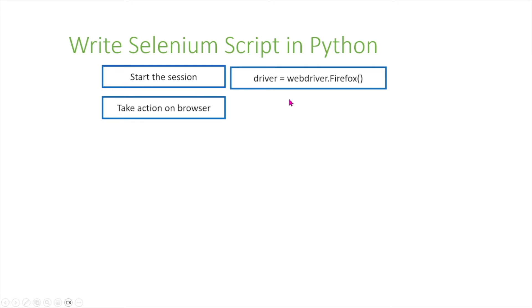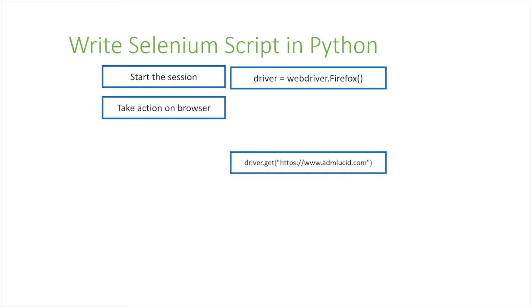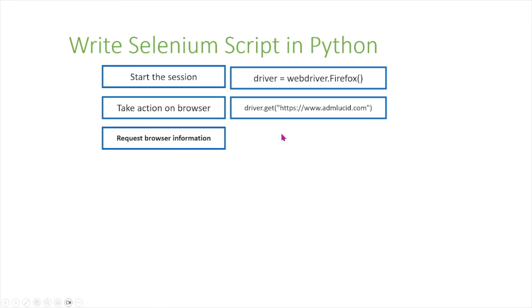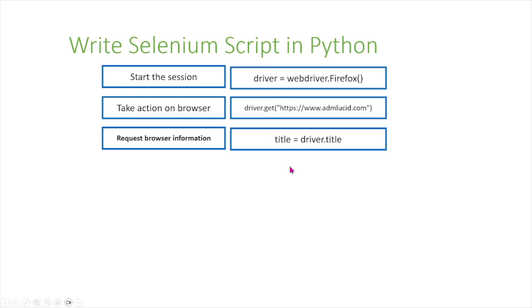Next, you can ask the webdriver to take some action on the browser. This can be `driver.get()` and then you enter a URL — in this case, admlucid.com. After that, you can request information from the browser, for example titles, subtitles, different text, text boxes, and so on. One example is you can say `title = driver.title`, which will return the title of the web page.